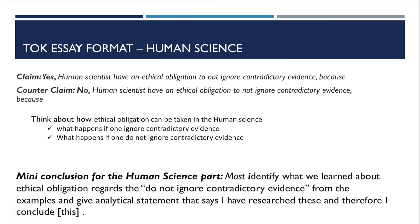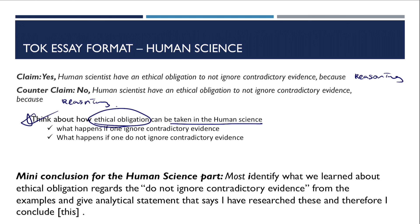Human science follows the same structure. Your claim will be: yes, human scientists have an ethical obligation to not ignore contradictory evidence, because... [your reasoning]. Think about how ethical obligation operates in human science, what happens if one ignores contradictory evidence, and what happens if one does not. For the subconclusion — same as history — identify what we learned about ethical obligation from the examples and give an analytical statement concluding your opinion.